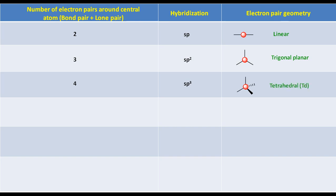If there are five electron pairs around the central atom, to find out the hybridization, write s, p, d. Put one on s, three on p, and the remaining one electron pair on d. So the hybridization will become sp3d. The electron pair geometry will be trigonal bipyramidal.